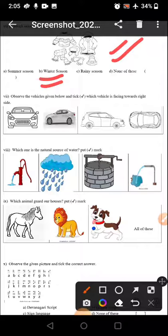Observe the vehicles given below and tick which vehicle is facing towards the right. Which vehicle is facing towards the right? So I think this one is the picture. This vehicle is facing towards the right. This is right direction. This is left direction.